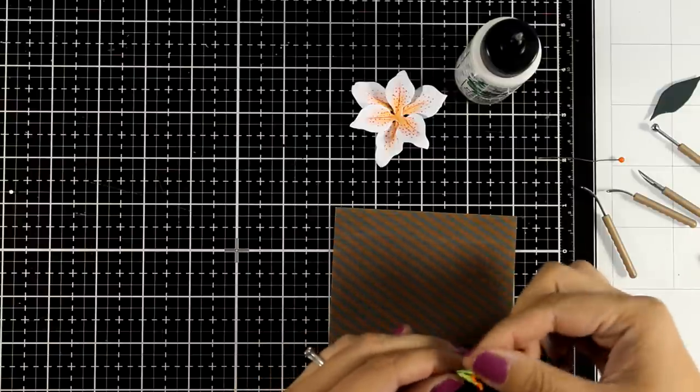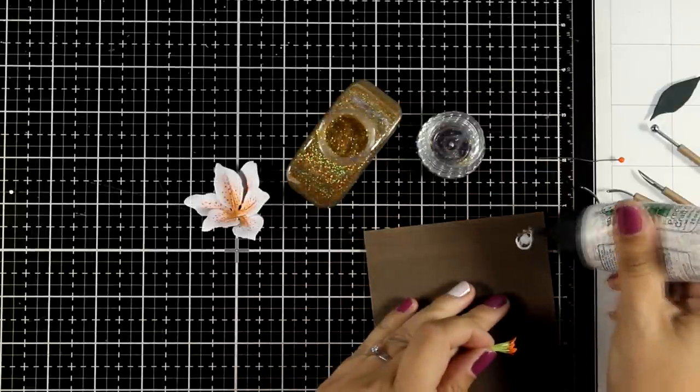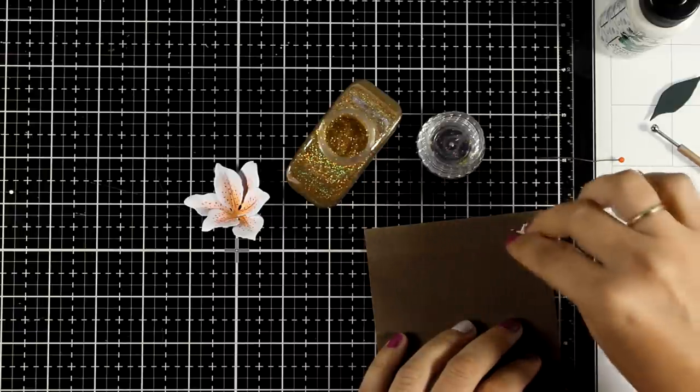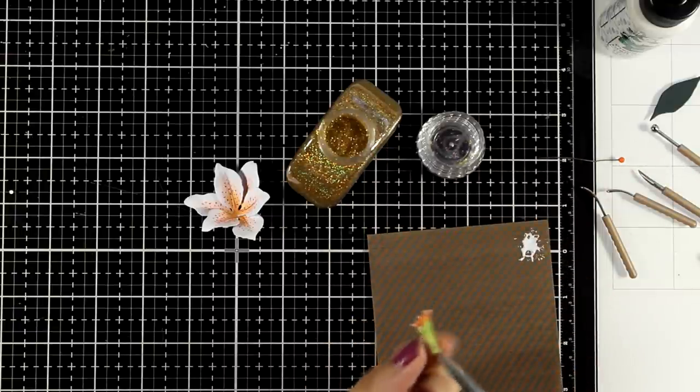Then I'm going to fluff it up and it's ready to go at the center of my flower. Now here is where I decided that I wanted to add a little bit of shine at the center so I'm just going to dip it in glue and stick it inside my jar of glitter.